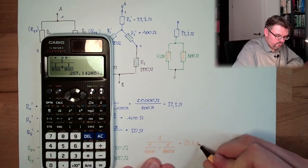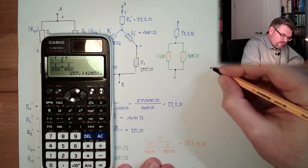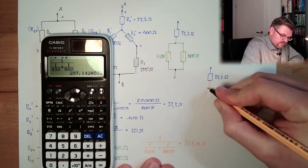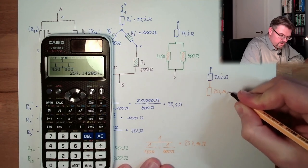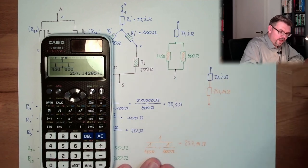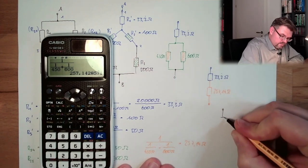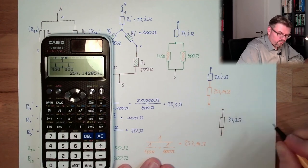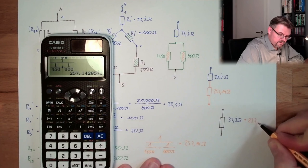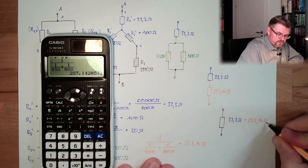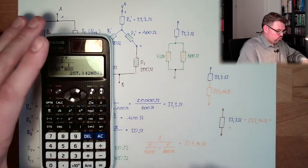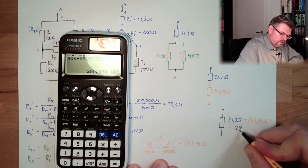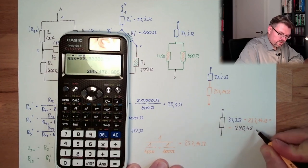What is left is 33.3 periodic ohms in series with 257.14 ohms. And in the end, we do have a resistance of 33.3 periodic ohms plus 257.14 ohms, and this equals 290.48 ohms.